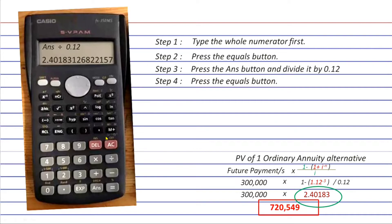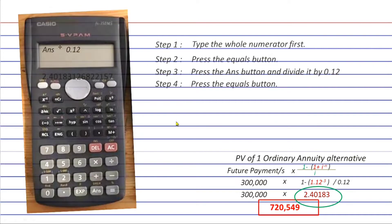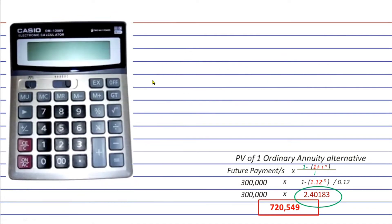Now let's go to using the basic calculators. The first thing that you should do is to focus on this 1 plus i raised to the power of negative n first. You need to ignore this 1 minus here and the denominator. Let's get this 1.12 raised to the power of negative 3 first.